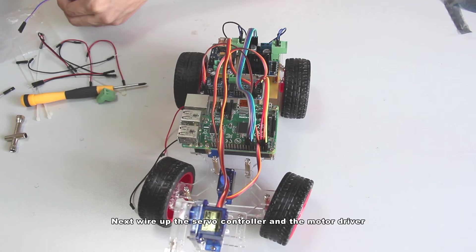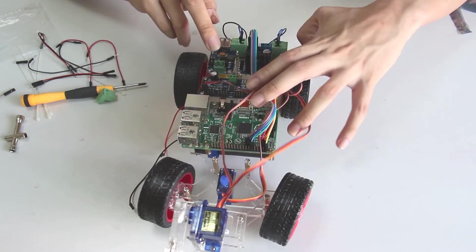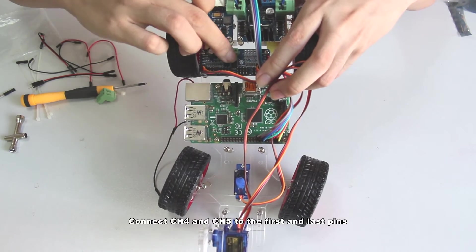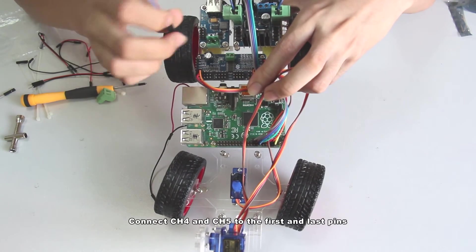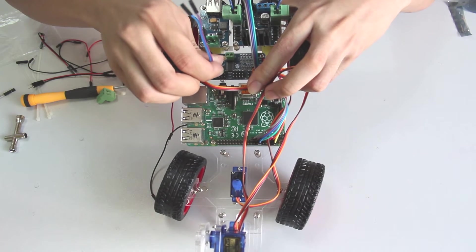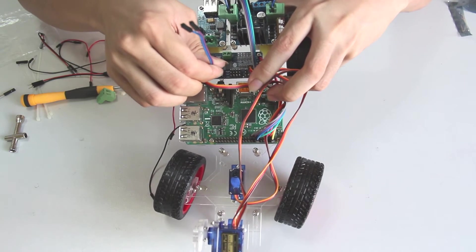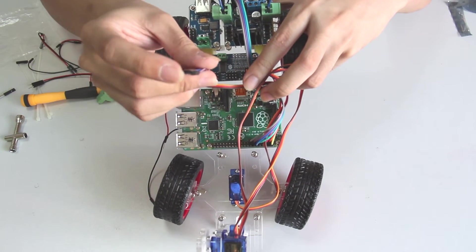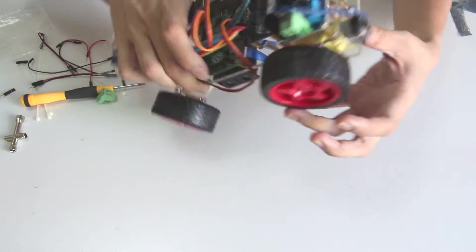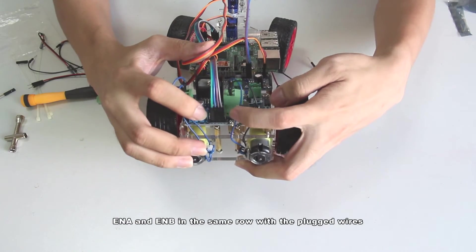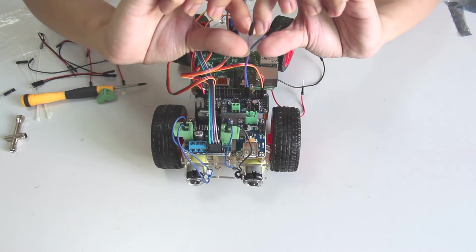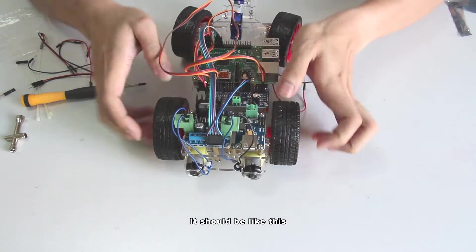Next wire up the servo controller and the motor driver. Take the 2 short wires. Connect channel 4 and channel 5 to enable A and enable B in the same row with the plugged wires. It should be like this.